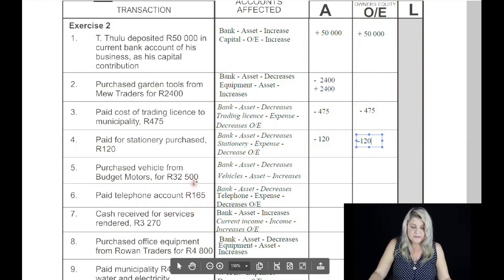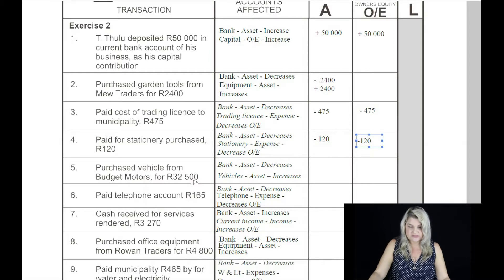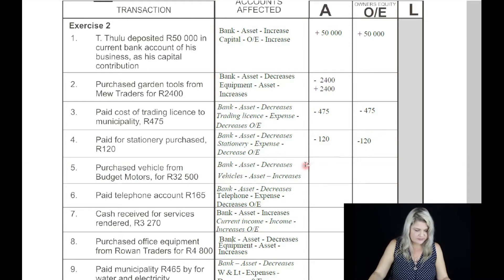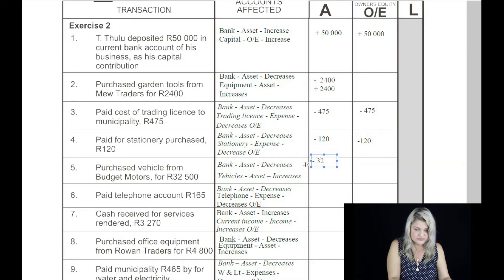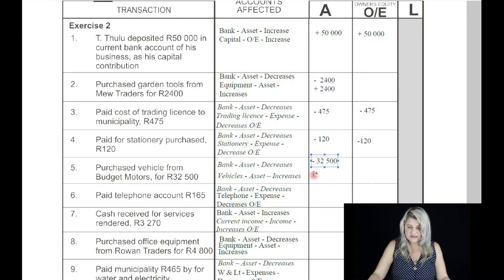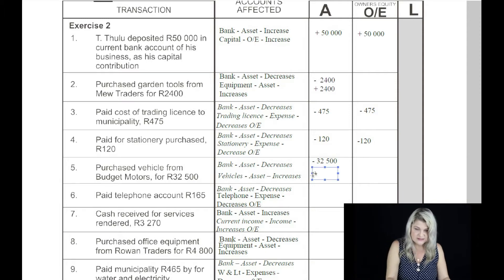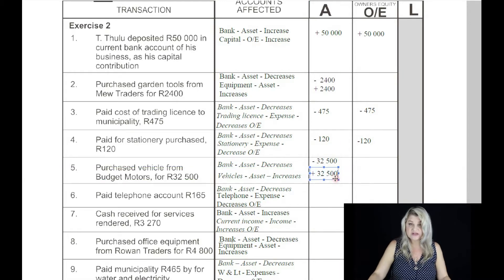Transaction number five: purchased vehicle from Budget Motors for 32,500 Rand. The two accounts that are affected — we know it's a cash transaction. So the first account is bank, and they bought a vehicle, so the second account is vehicles. Both are assets. When we pay for something, bank is decreasing — minus 32,500 Rand. But vehicles is also an asset, so we increase our assets by 32,500 Rand. The overall effect on the accounting equation is zero, because the one basically cancels out the other.